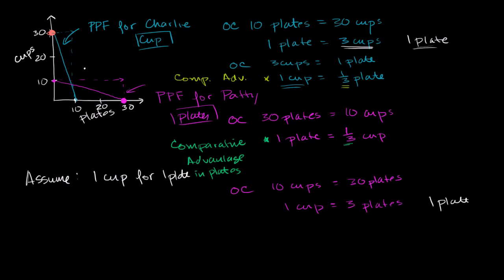Charlie can keep trading cups for plates and end up anywhere along that line, and Patty can do the same. If they both want to reach the 15-15 scenario, Charlie trades 15 cups for 15 plates and Patty trades 15 plates for 15 cups. They would both be able to reach that outcome, which is a situation that was unattainable left to their own production possibilities. By specializing in their comparative advantage and trading, they achieve these gains from trade.